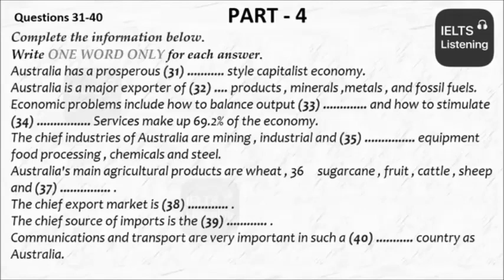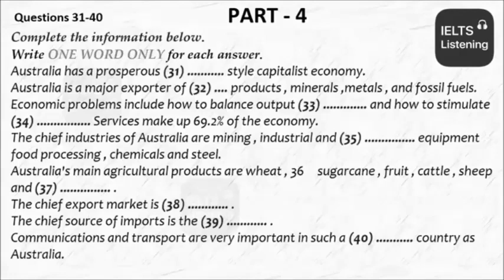The labor force has a similar pattern. The total labor force is 8.2 million. 34% work in finance and services, 23% work in public and community services, 20% work in wholesale and retail trade, 17% work in manufacturing and industry, and 6% work in agriculture. The chief industries of Australia are mining, industrial and transport equipment, food processing, chemicals, and steel.